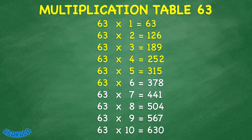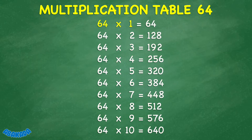63 times 6 equals 378. 63 times 7 equals 441. 63 times 8 equals 504. 63 times 9 equals 567. 63 times 10 equals 630. 64 times 1 equals 64. 64 times 2 equals 128. 64 times 3 equals 192.